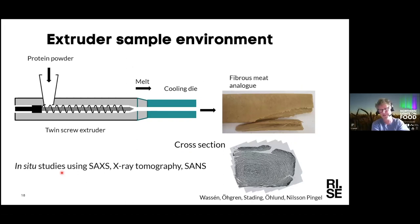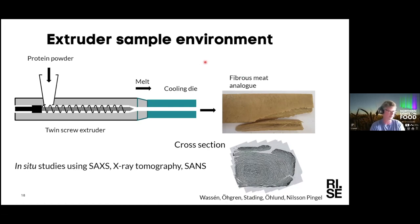Now one of my favorite topics — sample environments. Here is an example from an extruder. Imagine extrusion of protein powder to form fibrous meat analogues — this is very relevant now as we should eat less meat and have more plant-based products. You can clearly see a lot of fibrous structure formed, and looking at the cross-section you can also see some symmetry, which we believe is coming from the flow field. There are a lot of influences on the structure from what is happening inside the extruder.